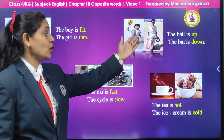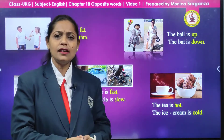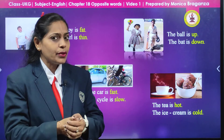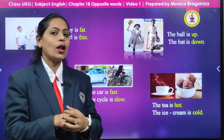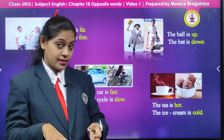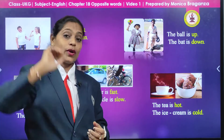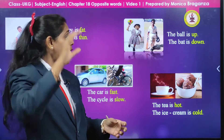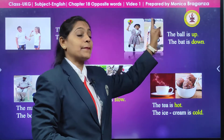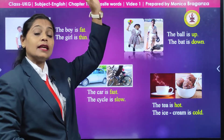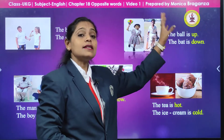Now same way we are having another picture. Can you see this girl? She is having something in her hand — a ball. Now where is the ball? It is up — it is in her hand and it is up. So what we are going to say: the ball is up.